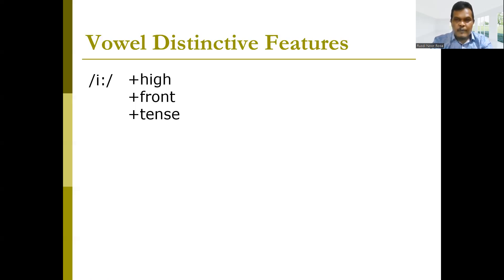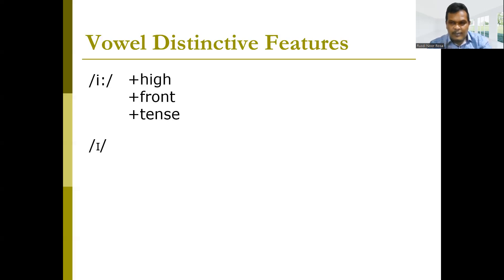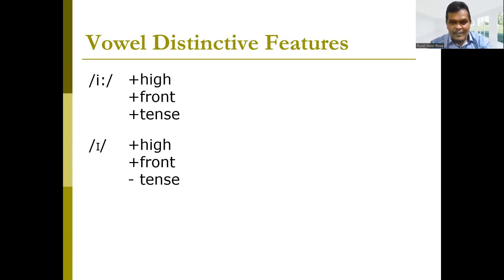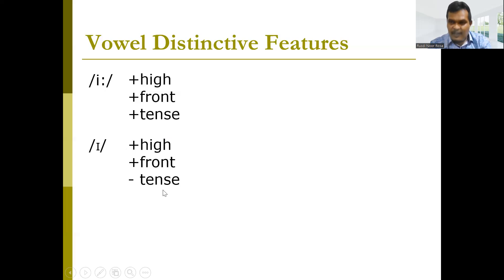Let's compare /iː/ with the other vowel located in the high and front position, which is /ɪ/. /ɪ/ is also a high and front vowel. However, it is not tense — so we assign it negative tense. You can see that /iː/ and /ɪ/ differ in terms of their distinctive features, and what makes them different is the tense feature: /iː/ is positive tense and /ɪ/ is negative tense.